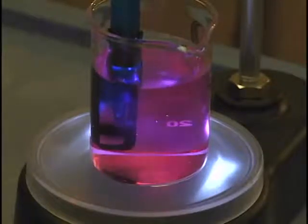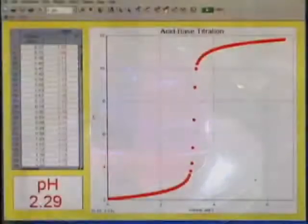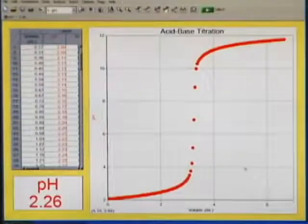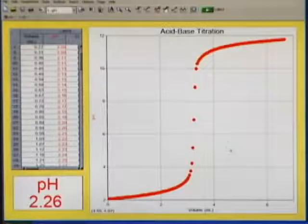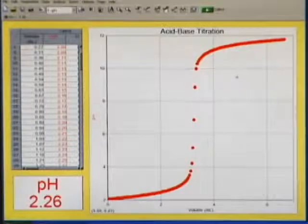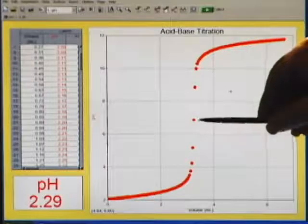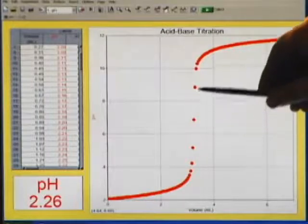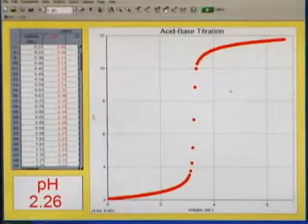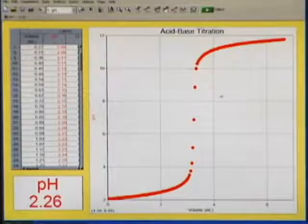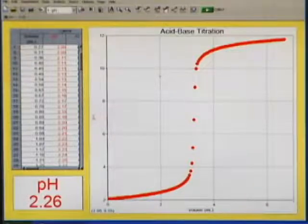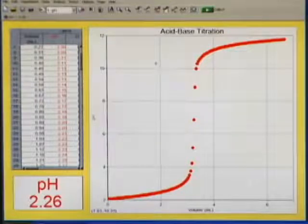So here's our completed titration data. We want to find the equivalence point of this. If you look at this pH data, you can see that probably between these two drops is the largest jump in pH, but that doesn't give us a very accurate reading. So what we would do is find the first derivative of this data, and in the Logger Pro file we've already done that for you on page two.